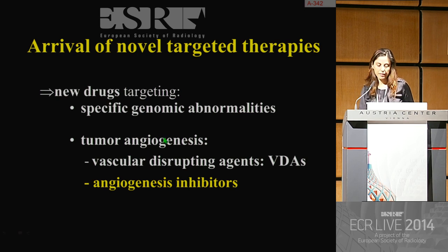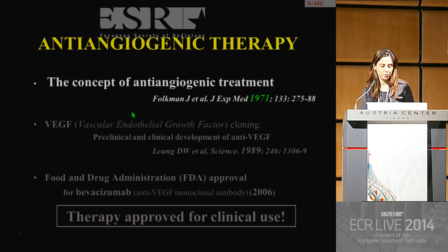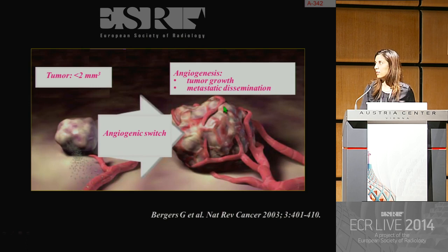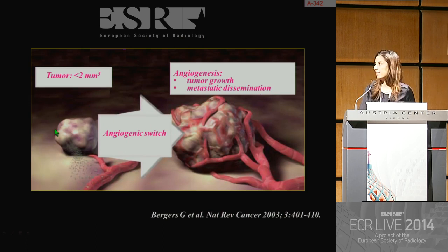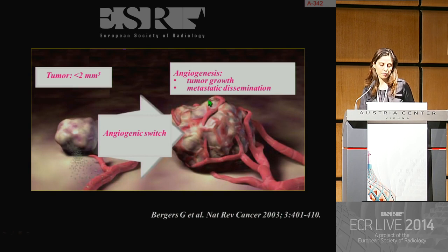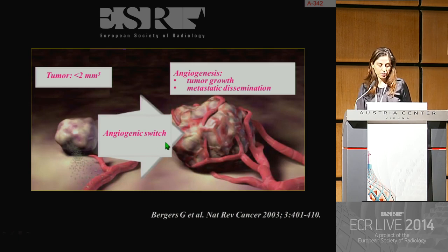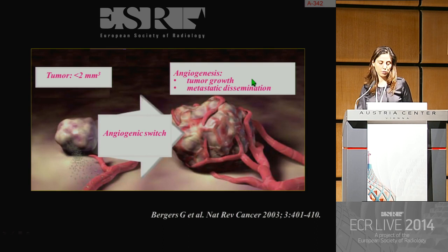The second approach is the inhibition of angiogenesis, firstly introduced by Folkman in 1971. According to Folkman's hypothesis, when a tumor has a small size, it receives nutrients by diffusion. But when the tumor becomes larger, angiogenesis occurs, and angiogenesis becomes crucial for tumor growth and metastatic dissemination.